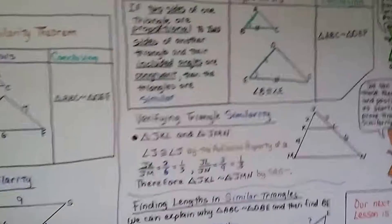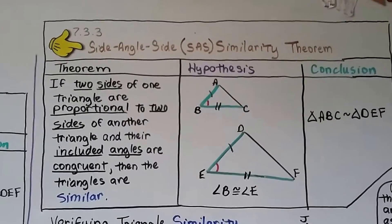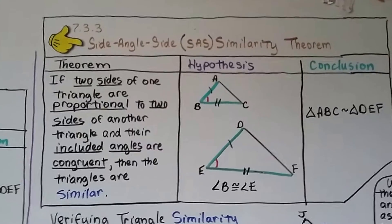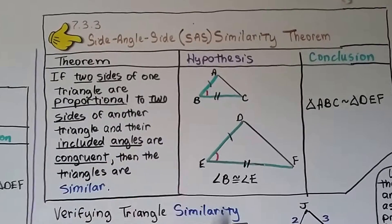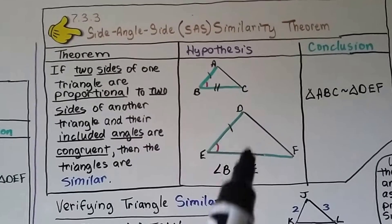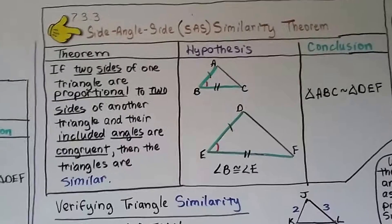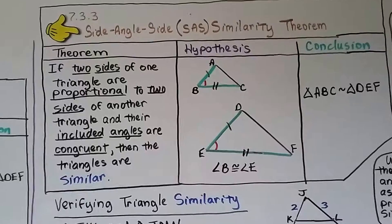Here's our second theorem, our last one: side angle side similarity. This is SAS. It says if two sides, we've got AB and BC of one triangle are proportional to two sides, DE and EF of another triangle, and their included angles are congruent.